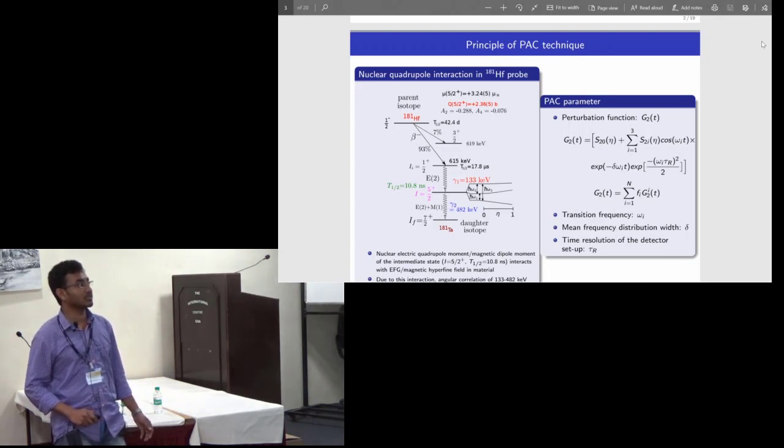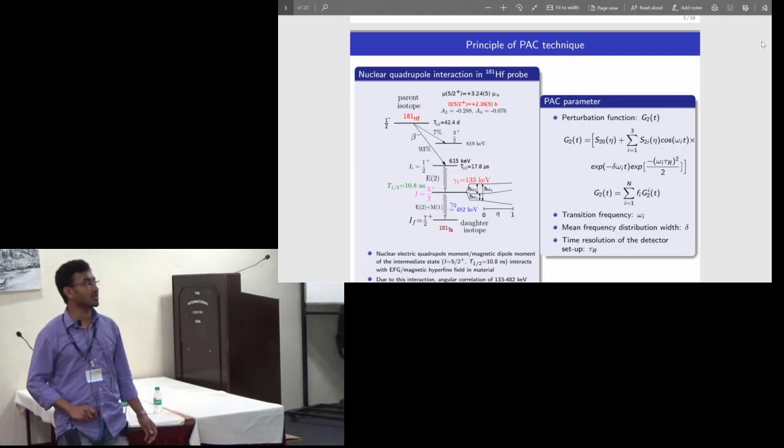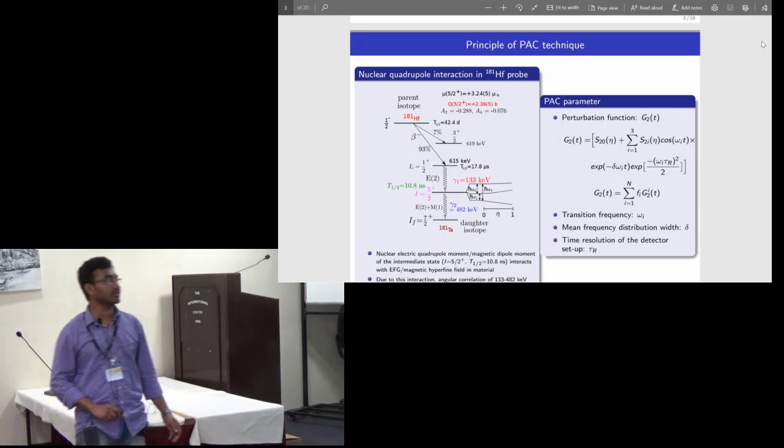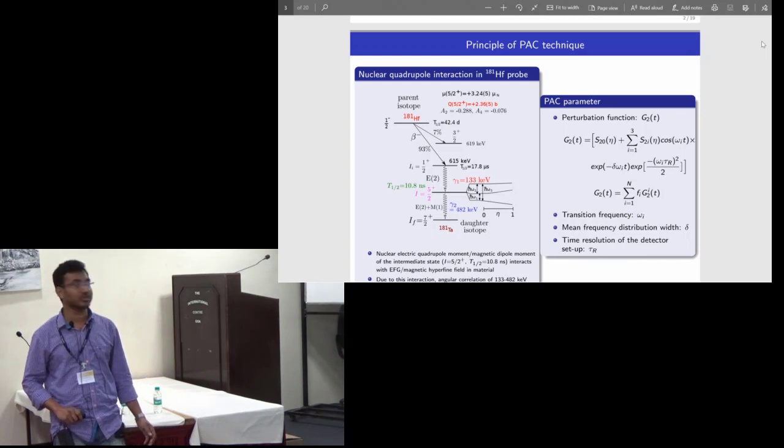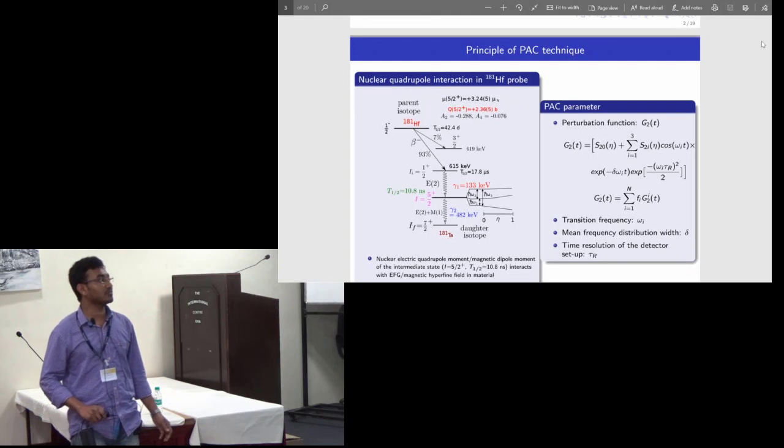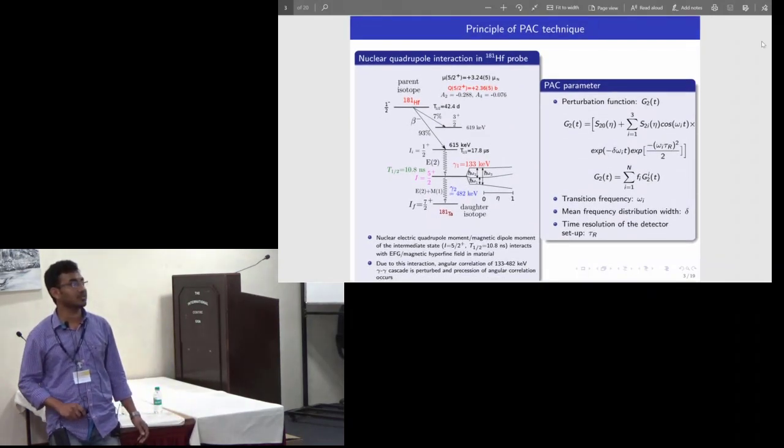The perturbation factor is written by this formula where omega_i are the transition frequencies between the different sub-levels of the intermediate state, and delta is the frequency distribution width, and the time resolution is given by tau. If there are more than one phases, then the total perturbation function is given by this sum formula.